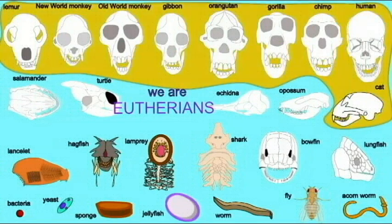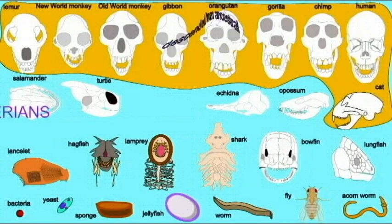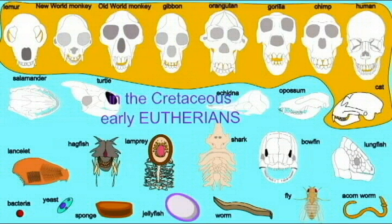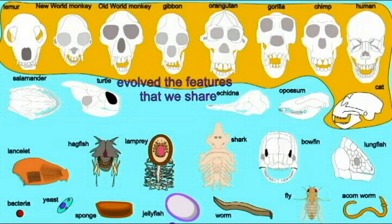We are Eutherians. This is a common ancestor for Eutherians, and in the Cretaceous, early Eutherians shared all of the features that we share.